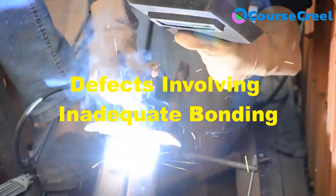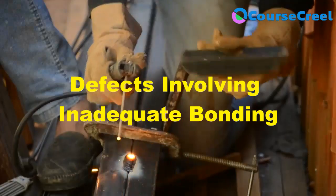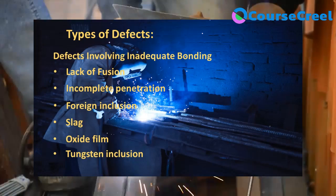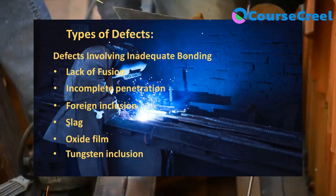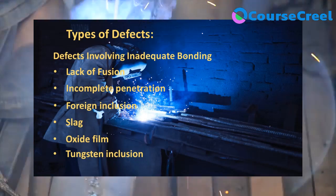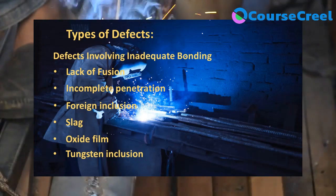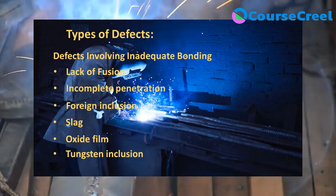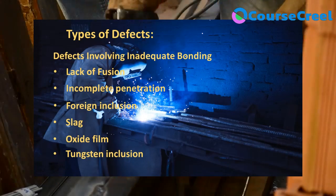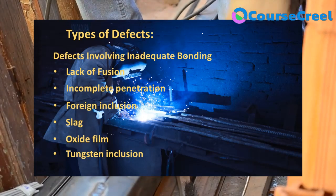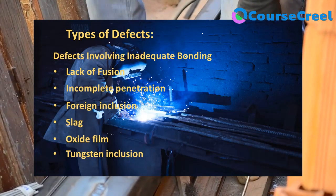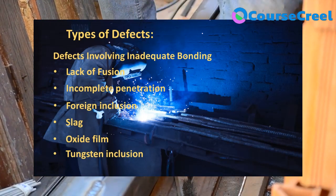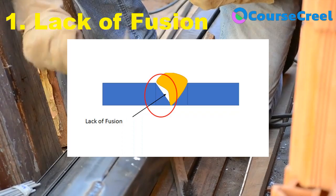The first category is defects involving inadequate bonding. In this category we consider a number of defects such as lack of fusion, incomplete penetration, slag inclusion, oxide film inclusion, tungsten inclusion, and others. We will discuss each of these types of defects one by one.